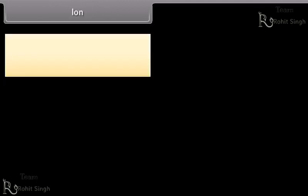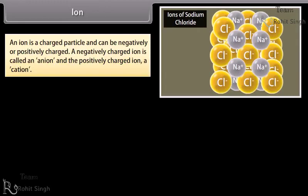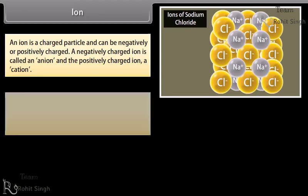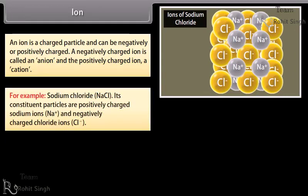An ion is a charged particle and can be negatively or positively charged. A negatively charged ion is called an anion and the positively charged ion is called a cation. For example, sodium chloride. Its constituent particles are positively charged sodium ions and negatively charged chloride ions.